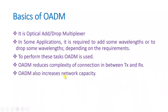OADM also increases network capacity. The reason is that in between the network we can connect more nodes — or more terminals — and we can also receive signals in between the network. So by having OADM we increase the number of connections in the network, thereby increasing network capacity.